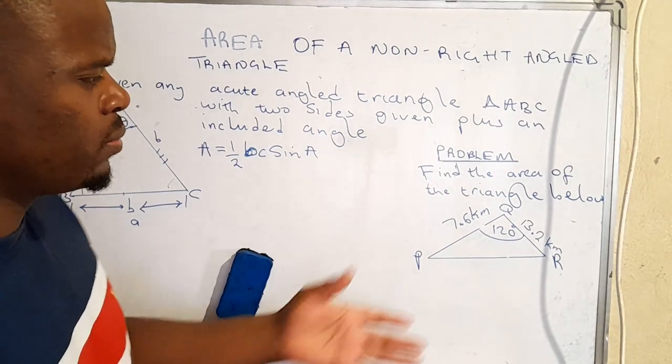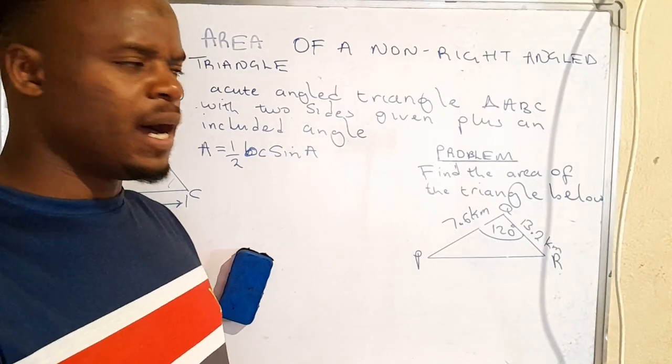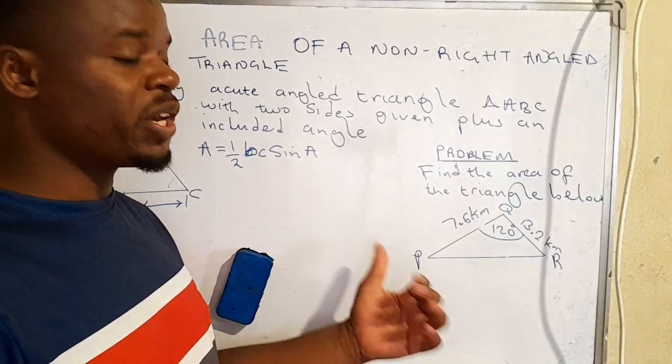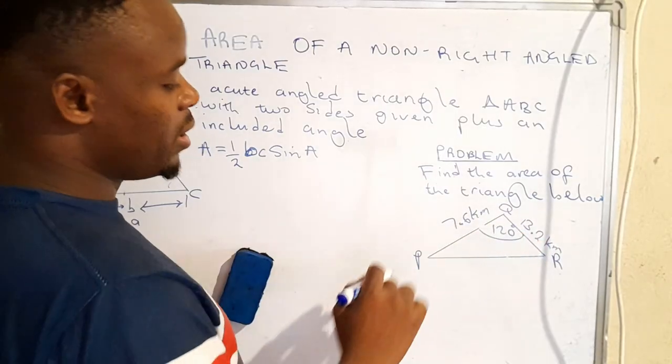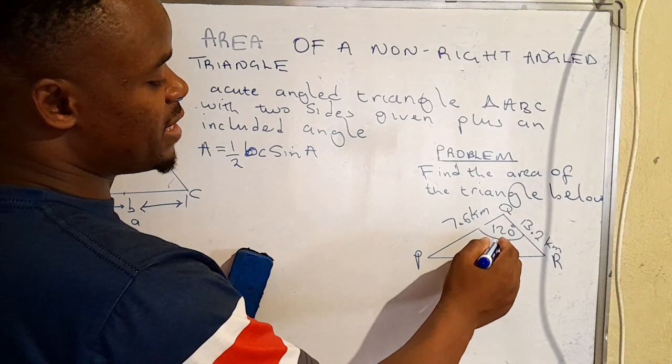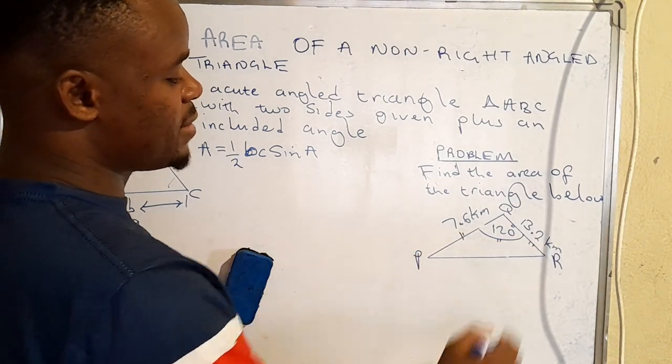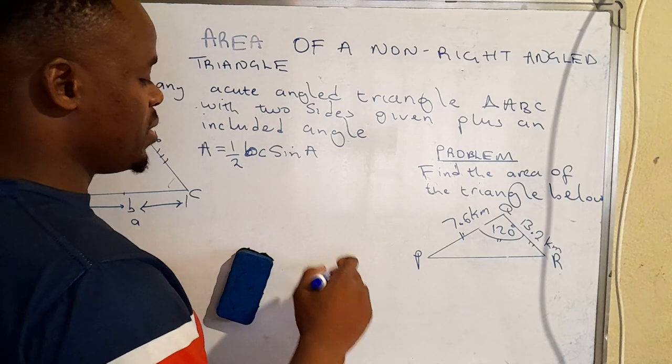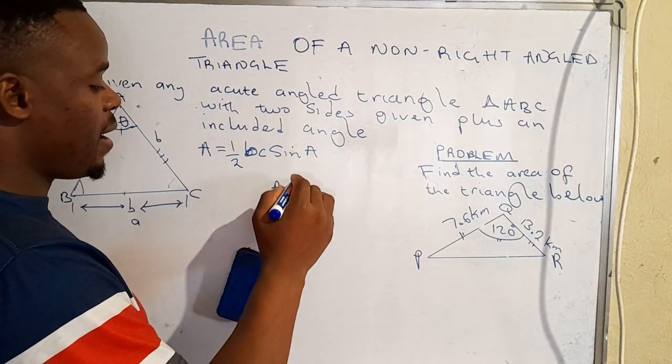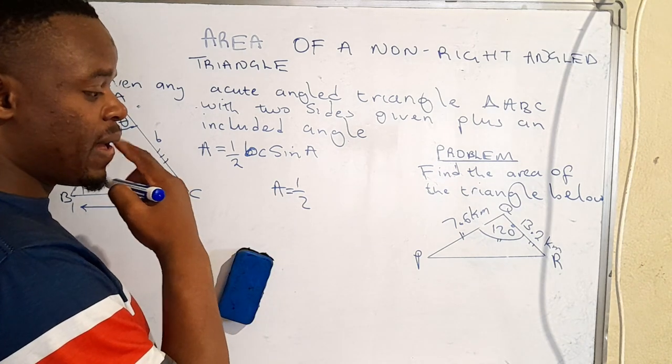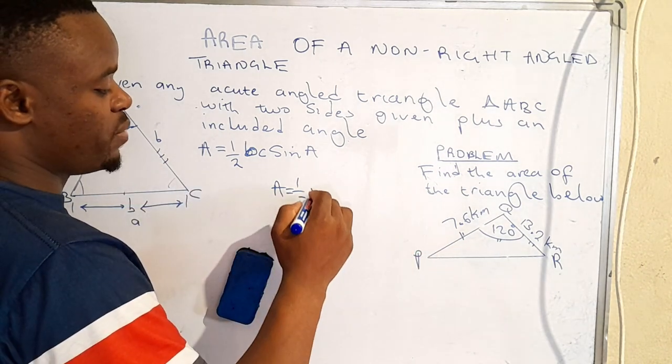So with that in mind, we can now demonstrate how to do that by actually picking on this problem. As I find the area of the triangle below, we've been given this angle and then we've been given these two sides. And so what we do is we say area is given by half, the side that has been given, that is p,